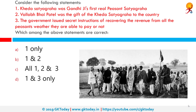Consider the following statements. Number one: Kheda Satyagraha was Gandhiji's first real peasant Satyagraha. Number two: Vallabhbhai Patel was the gift of the Kheda Satyagraha to the country. Number three: the government issued secret instructions for recovering revenue from all peasants, whether they were able to pay or not. Which among the above statements are correct? Only statements one and two are correct. Statement three is incorrect — the government actually issued instructions to recover revenues only from those peasants who were able to pay.